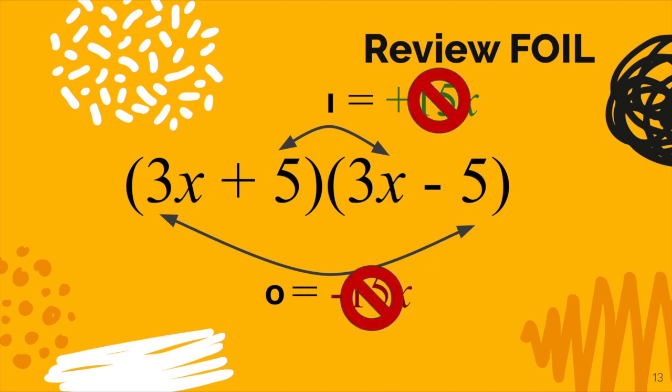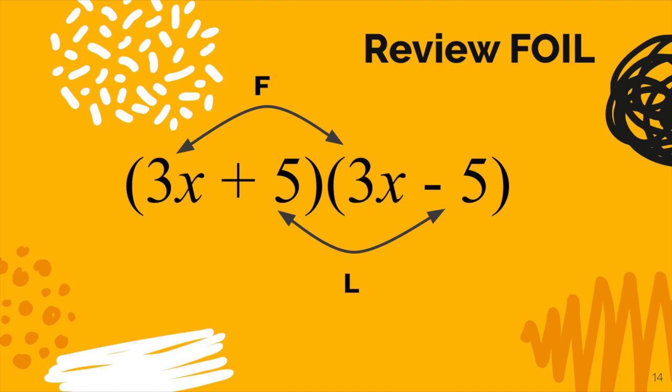So really all we care about is the F and the L here in this particular problem. The F would be 9x squared and the L would be negative 25. So those two binomials multiplied together is actually a binomial this time, 9x squared minus 25.